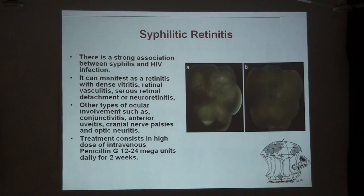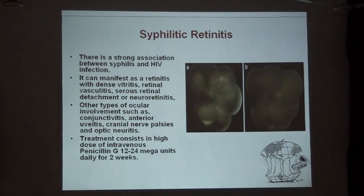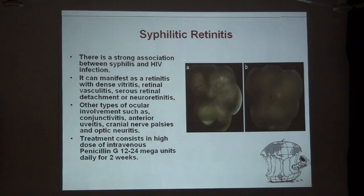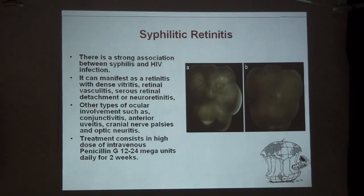Syphilis is very strongly associated with HIV infection — as many as 40% of patients with syphilis may have HIV infection, due to the sexual mode of transmission of both. Syphilis can affect the eye in its secondary and tertiary forms. The ocular manifestations are regarded as neurosyphilis and can cause retinitis, vitritis, retinal vasculitis, serous retinal detachments, and neuroretinitis. The anterior segment can be affected with conjunctivitis, interstitial keratitis, anterior uveitis, and cranial nerve palsies. Treatment is high-dose penicillin G, 12 to 24 mega units daily, intravenously for 2 weeks.